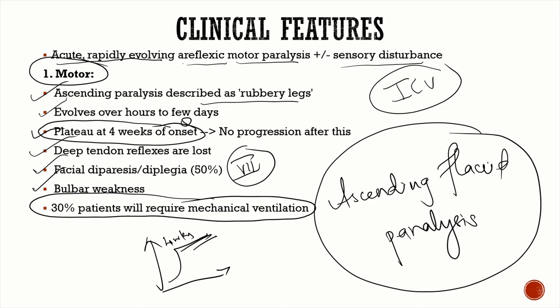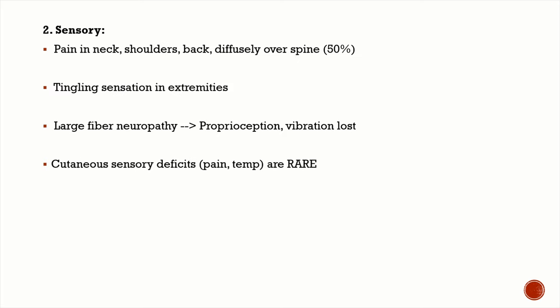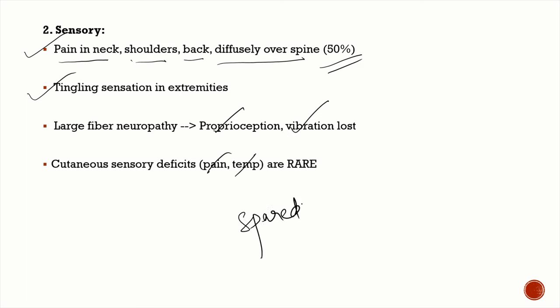Sensory symptoms are less pronounced than motor symptoms. Since GBS is a polyradiculoneuropathy, patients experience pain in the neck, shoulders, back, and diffusely over the spine in more than 50 percent of cases, along with tingling and paresthesias in the extremities. Large fiber sensations such as proprioception and vibration are predominantly lost, while small fiber sensations like pain and temperature are usually spared.